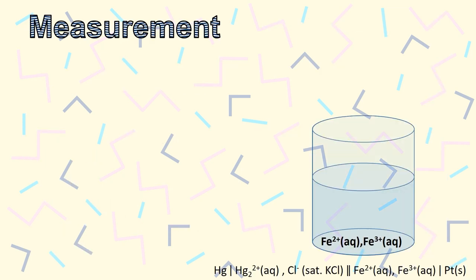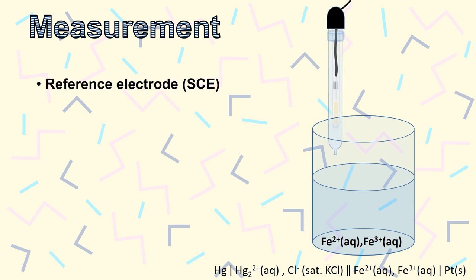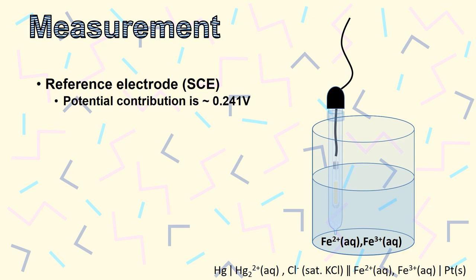Let's say you wanted to analyze an unknown iron solution. The line notation for an SCE against the iron half-reaction is shown below the beaker. Let's put the SCE in the solution. Remember that the potential contribution was about 0.24 volts for an SCE.